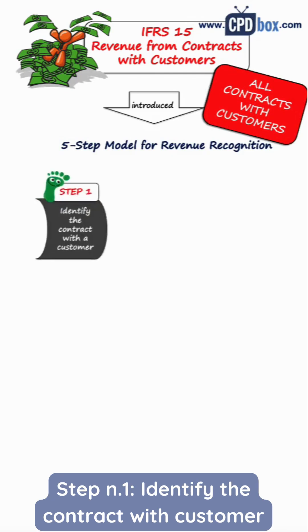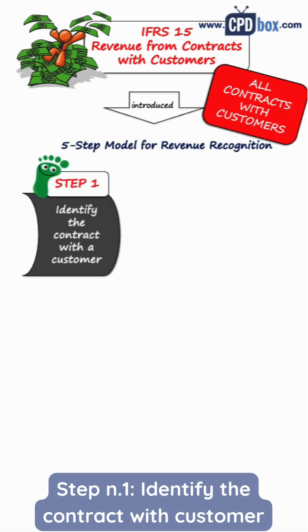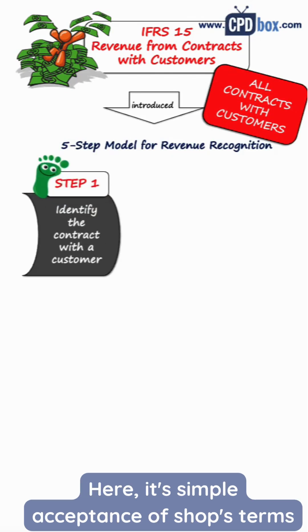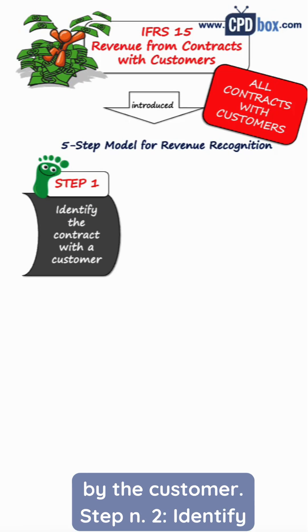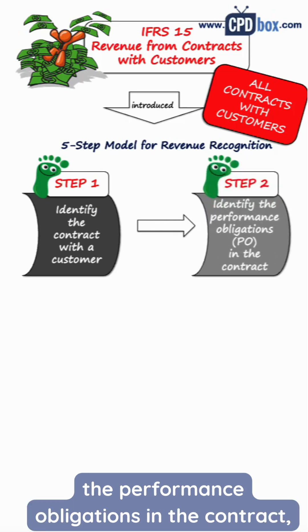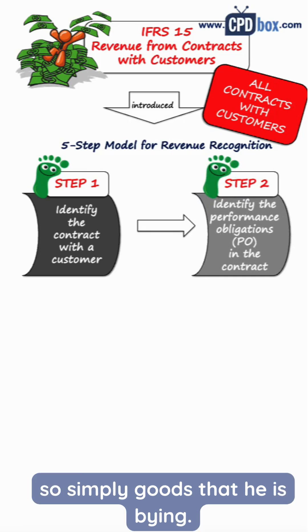Step number one: identify the contract with the customer. Here, it's simply the acceptance of the shop's terms by the customer. Step number two: identify the performance obligations in the contract — simply the goods that the customer is buying.